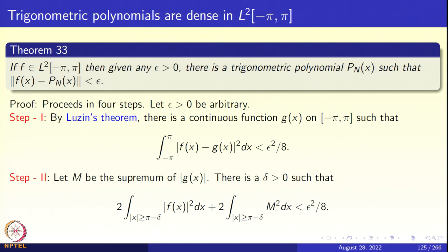Step 2: let M be the supremum of |g(x)|. Then there is a δ > 0 such that the integral of |f(x)|² dx over |x| ≥ π − δ, plus 2M² times the measure of that region, is less than ε²/8. In other words, the contribution of |f(x)|² and M² from the ends of the interval is small.